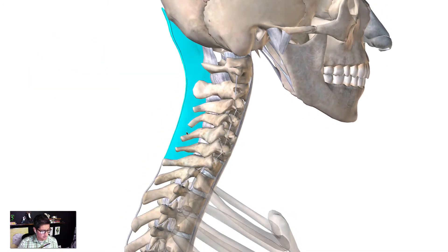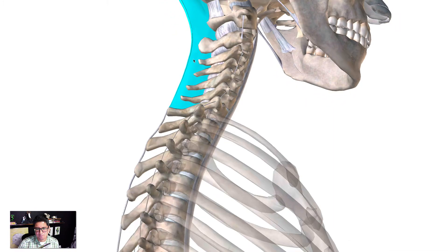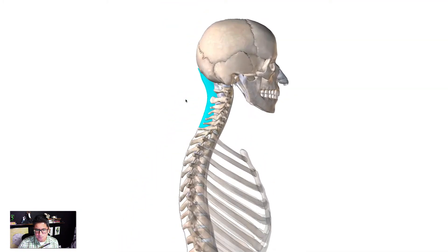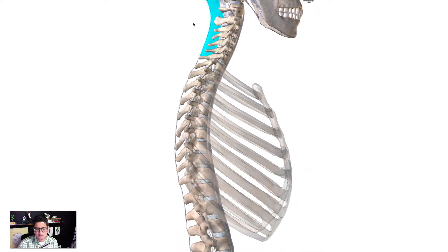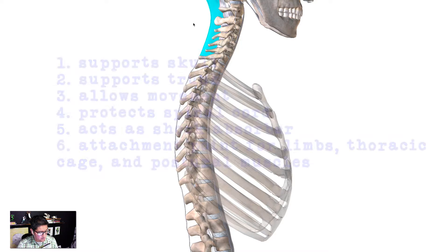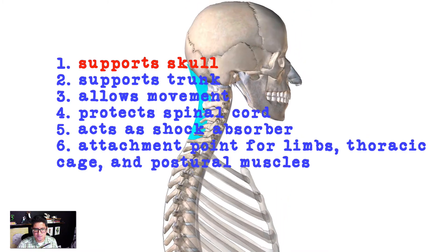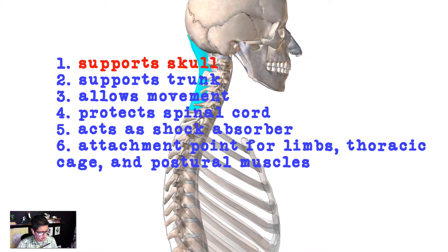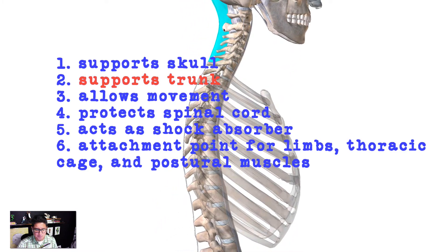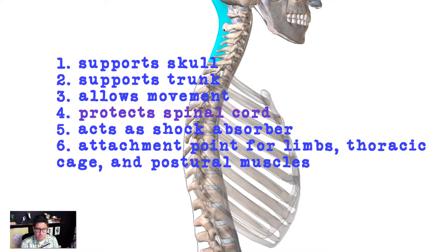Now let's talk about some of the basic features and functions of the spine. There are six main jobs. Number one, it provides support for the skull. Number two, it provides physical support for the trunk and movement of the body in general. Number three, it protects the spinal cord. Number four, it acts as a shock absorber while you run and walk in your day-to-day activities. Number five, it serves as attachment points for the limbs and the thoracic cage.